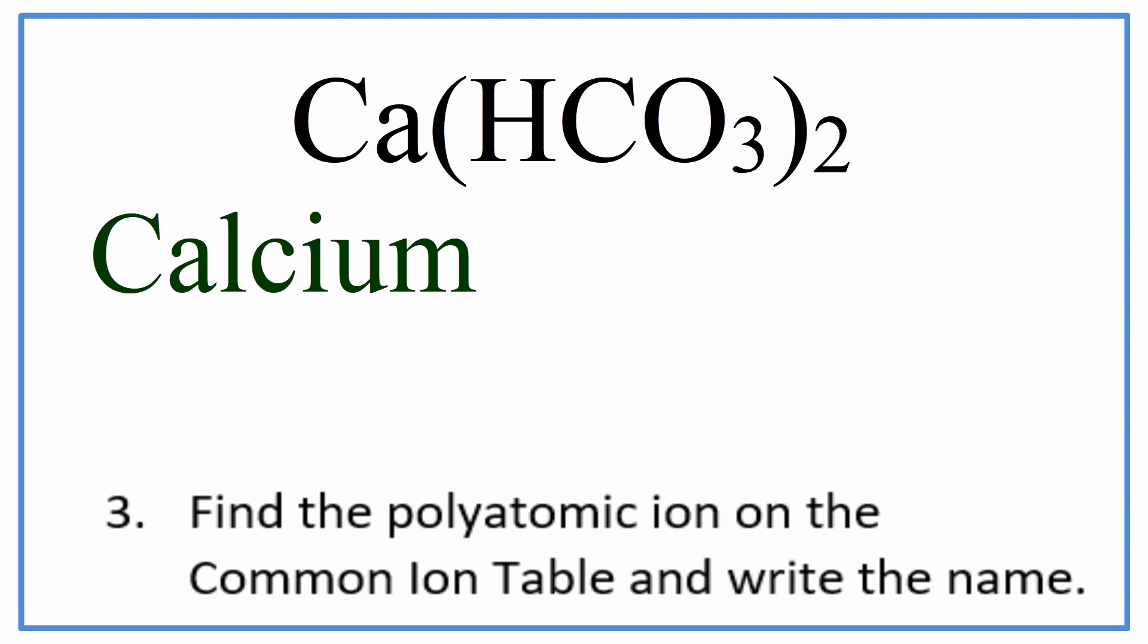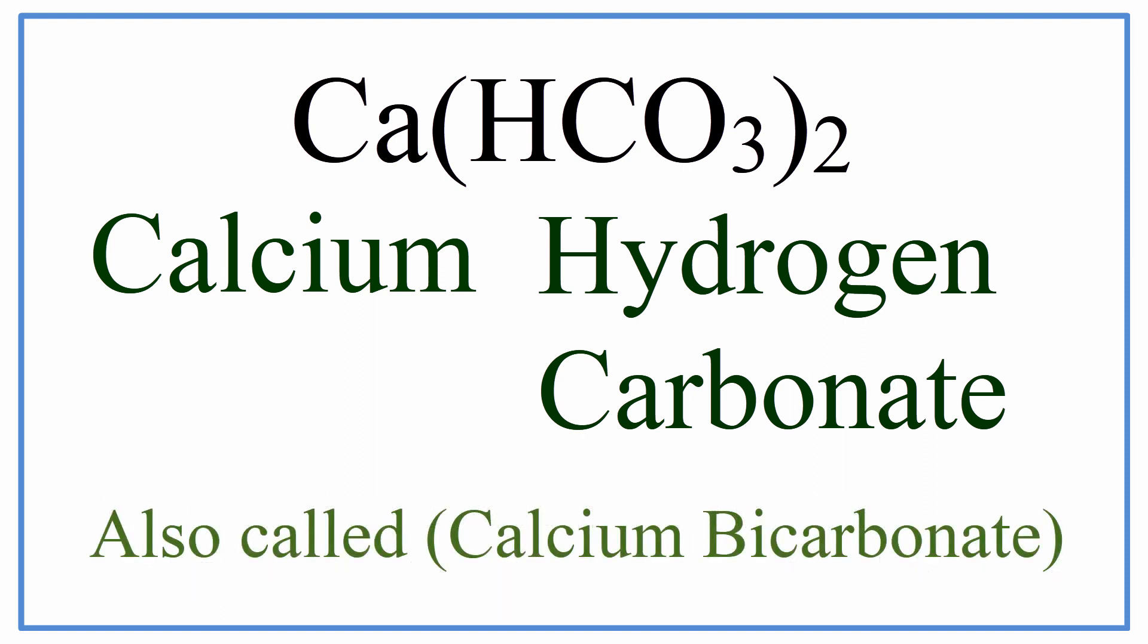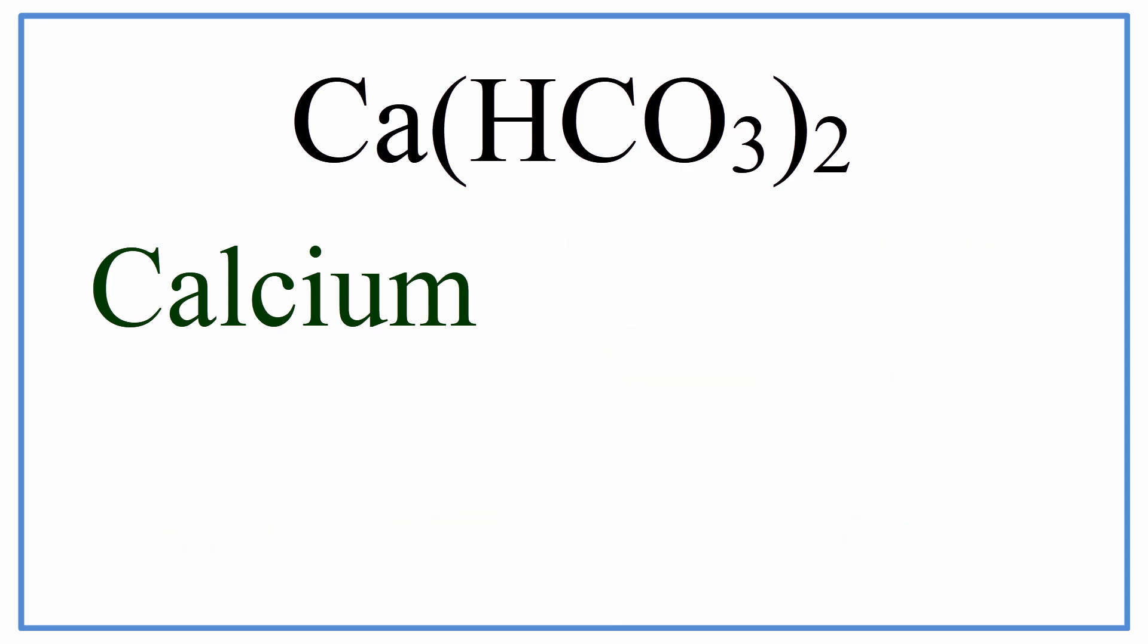Finally, we write the name for the polyatomic ion. Since it's a polyatomic ion, we need to look it up on the common ion table. For HCO3, that's hydrogen carbonate, and that's the name for Ca(HCO3)2.